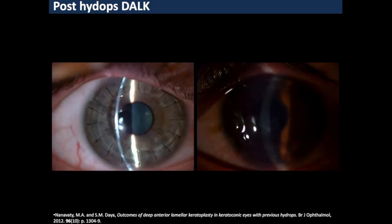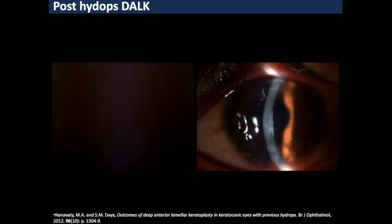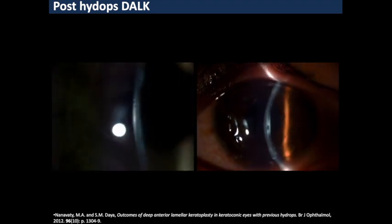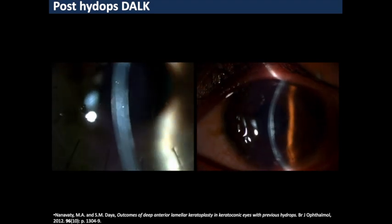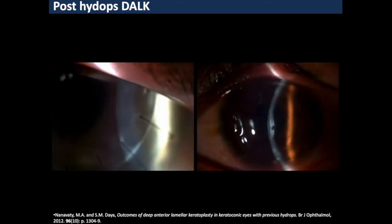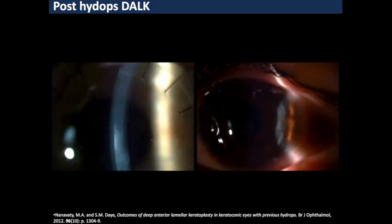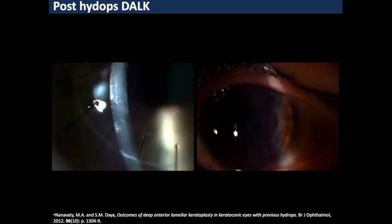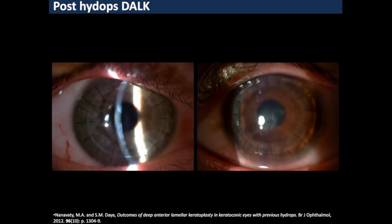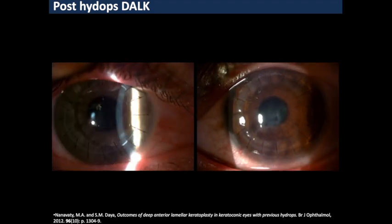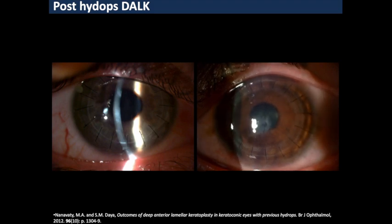Post-operatively, these patients may retain a deep level of stromal scarring but visually they do very well. They may not achieve 6/6 or 20/20 vision, but they can certainly achieve a corrected vision of 6/12 or driving standard. Shearer and Daya's group in the UK have published very decent visual outcomes in patients who've undergone DALK following hydrops. We definitely feel that DALK is the go-to procedure in keratoconus patients, particularly in New Zealand where the risk of rejection and hydrops pre-surgery is high.